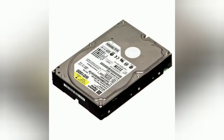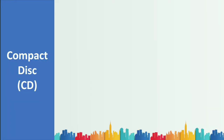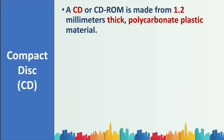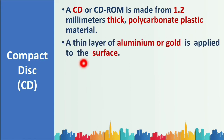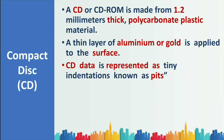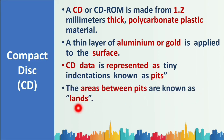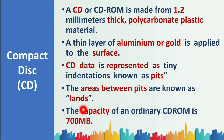A CD or CD-ROM is made up of 1.2 millimeter thick polycarbonate plastic material with a thin layer of aluminum or gold applied on the surface to store data. CD data is represented as tiny indentations known as pits. The areas between pits are known as lands. The maximum capacity of an ordinary CD-ROM is 700 MB.